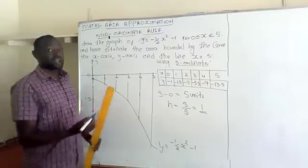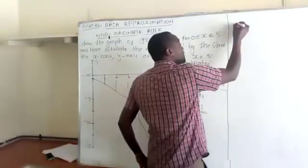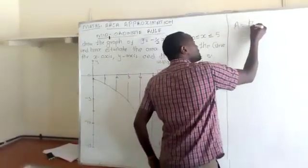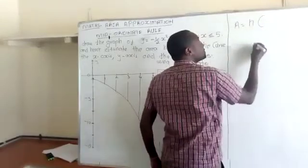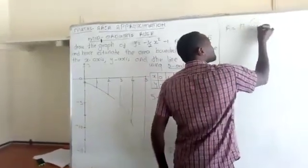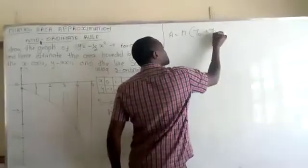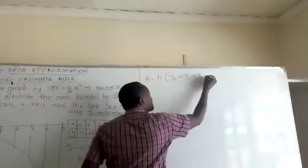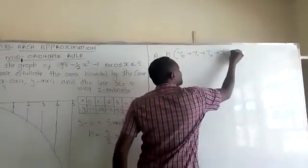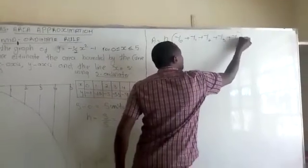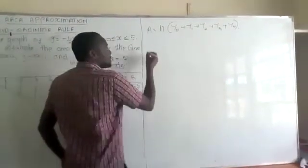The area should be equal to h into, we have 5 ordnates, so y naught plus y1 plus y2 plus y3 plus y4.